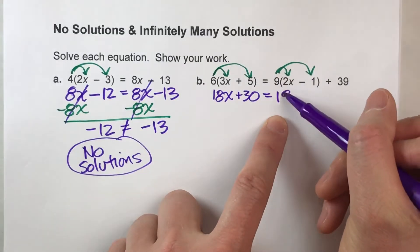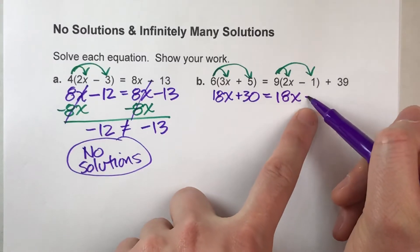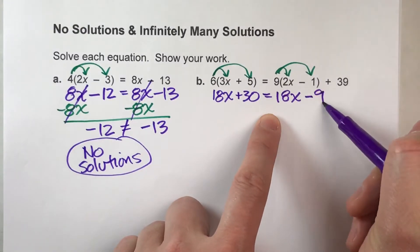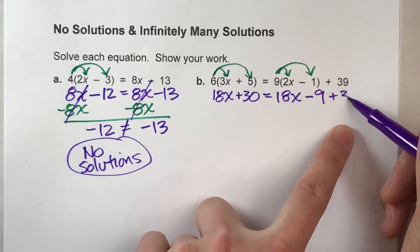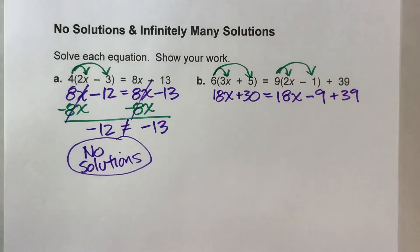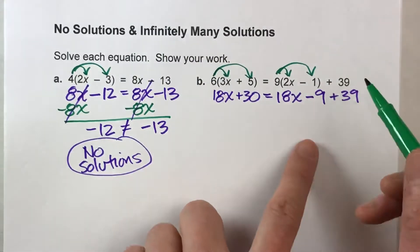we're going to distribute our 9 to everything in the parentheses. 9 times 2x is 18x. Drop down that minus. 9 times 1 is 9. And I've got a plus 39. So far, so good.